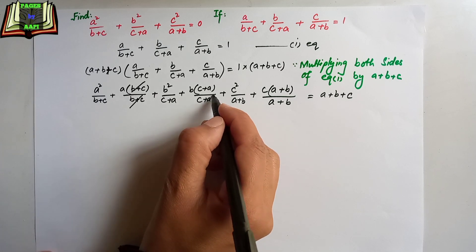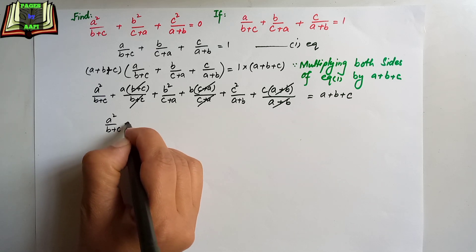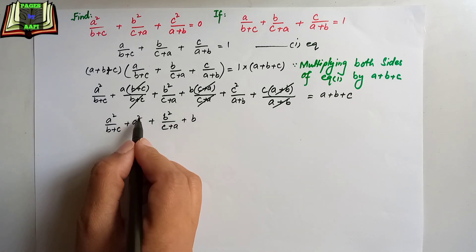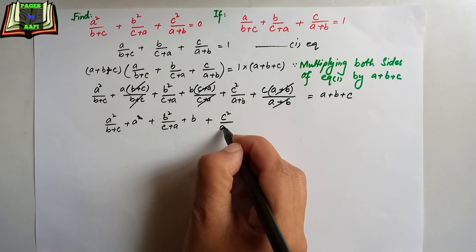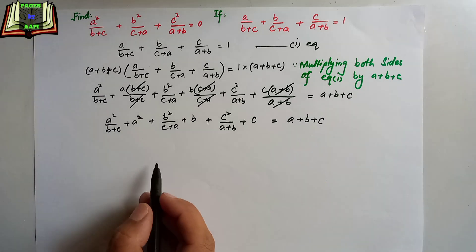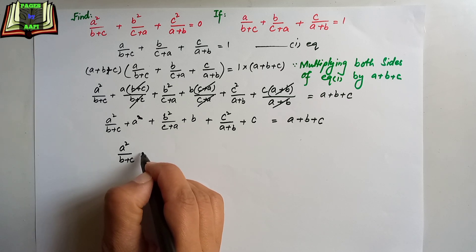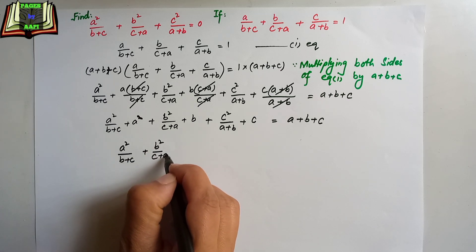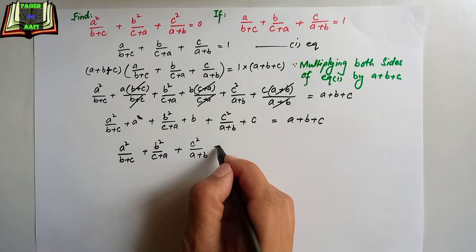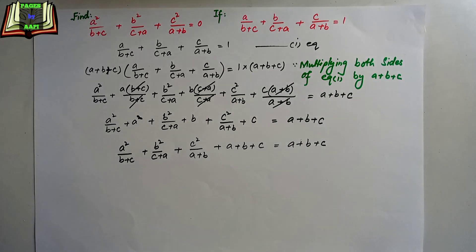Now the cross terms cancel out, and what we are left with is a²/(b+c) + b²/(c+a) + c²/(a+b), and on the right-hand side (a+b+c). At this step we rearrange: a²/(b+c) + b²/(c+a) + c²/(a+b) + (a+b+c) = (a+b+c).